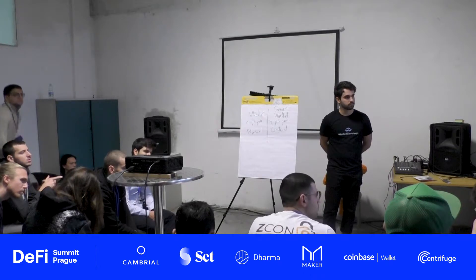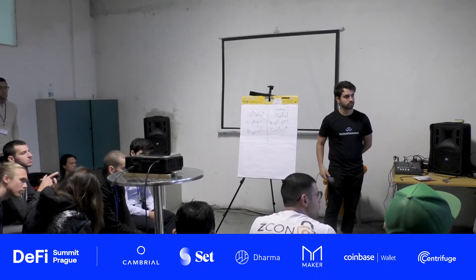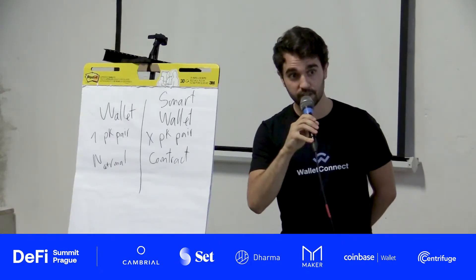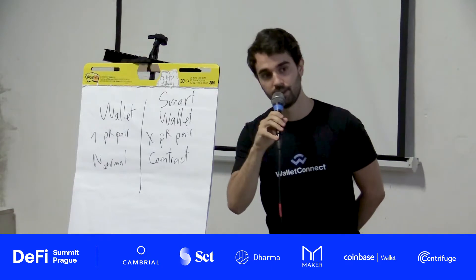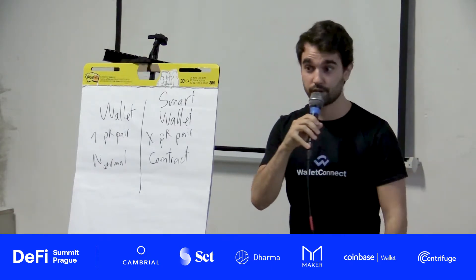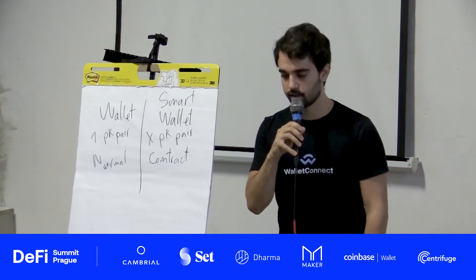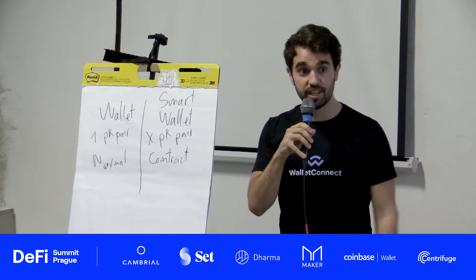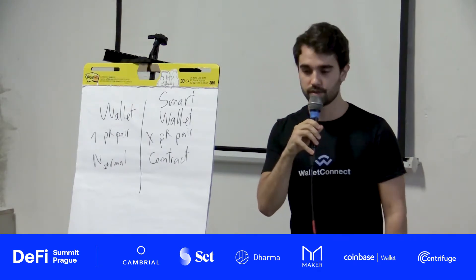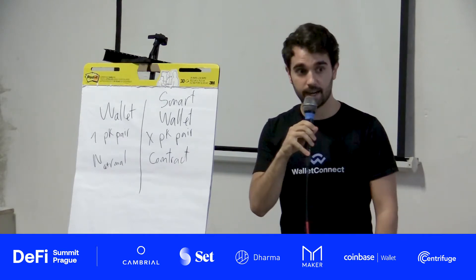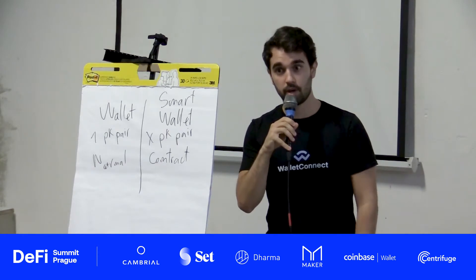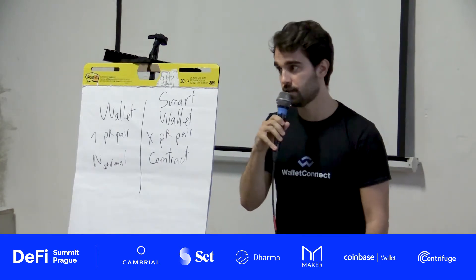Are there any group projects tackling subscriptions? Subscriptions are heavily dependent on metatransactions — they're a superset of metatransactions where you have recurring metatransactions. There's ERC-1337, and projects working on it include 8X Protocol and Groundhog, plus many people working open source to make ERC-1337 available.